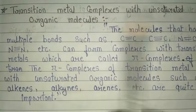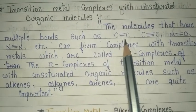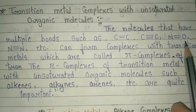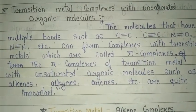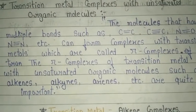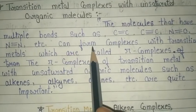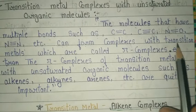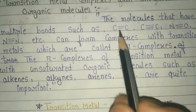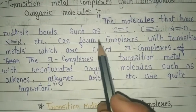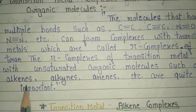Transition metal complexes with unsaturated organic molecules: molecules that have multiple bonds such as C=C, C≡C, N=O, and N≡N — any molecules with multiple bonds like C=C or C≡C — can form complexes with transition metals. These are called pi complexes.